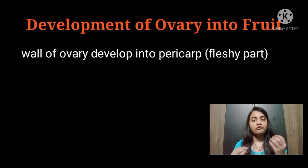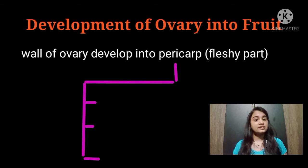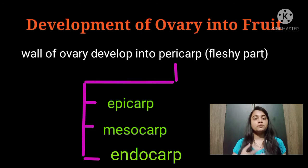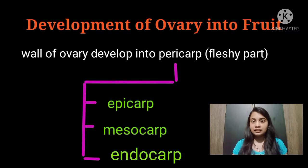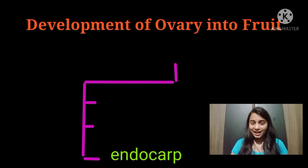What is pericarp? Pericarp is the fleshy area of the fruit and it is divided into three parts: epicarp (the outer part), mesocarp (the middle part), and endocarp (the innermost part). Different fruits take different structures from these layers, but the edible part is the pericarp.